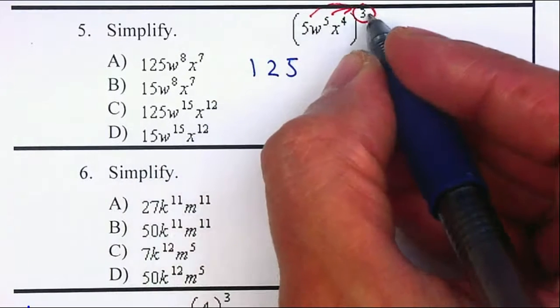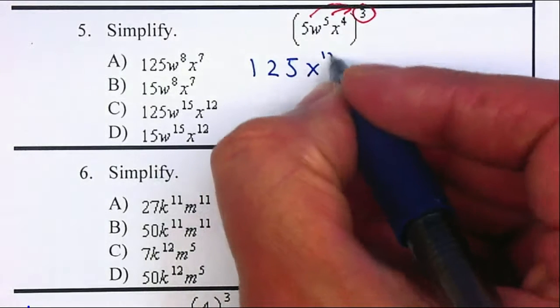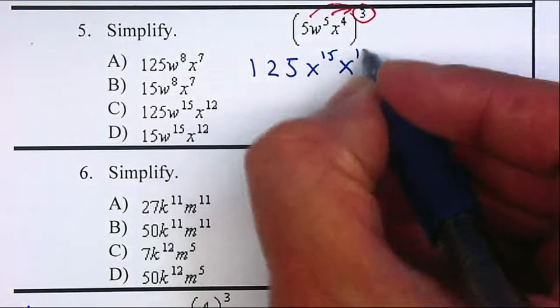Then we're going to multiply 5 times 3 will give us 15, and 4 times 3 will give us 12.